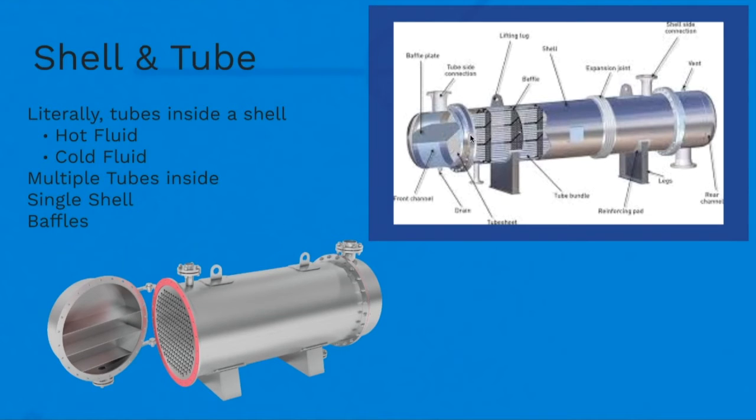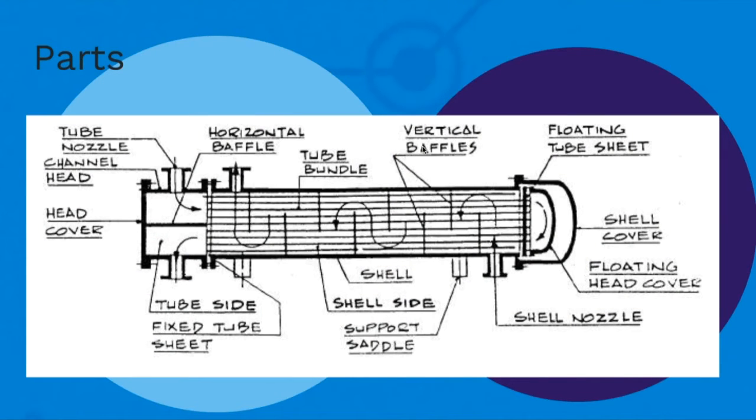Let me continue with the parts of a heat exchanger. You have the tube or nozzle where the inlet fluid enters. There's a head cover that prevents the fluid from going directly through, forcing it through the baffles. These baffles allow fluid movement—the more time it takes, the more time for heat transfer. Eventually the fluid flows all the way back.